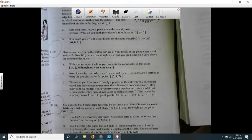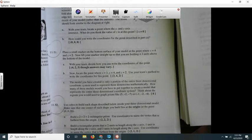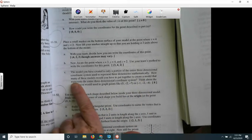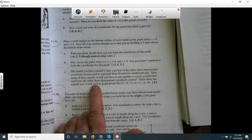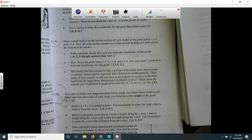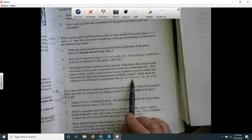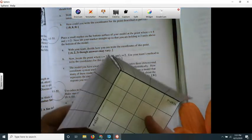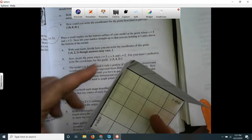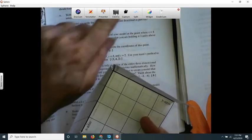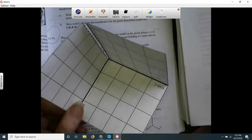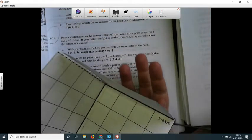The model you created is only one portion of the entire three-dimensional coordinate system used to represent three dimensions mathematically. So it asks you how many models would you need to put together to create a model that represents the entire three-dimensional coordinate system. Well, if I have negative coordinates, this is only the positive. Negative on the Y axis would be like on the other side of this paper, right? That would be negative Y's and negative X's would be back here. And then this is Z going up and down. Negative Z would be down there. So there'd actually be eight of these. Four on the top and then four like underneath.